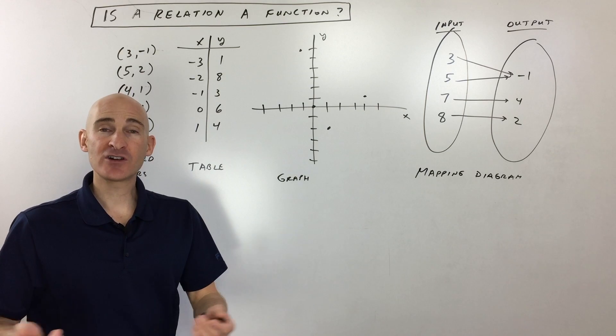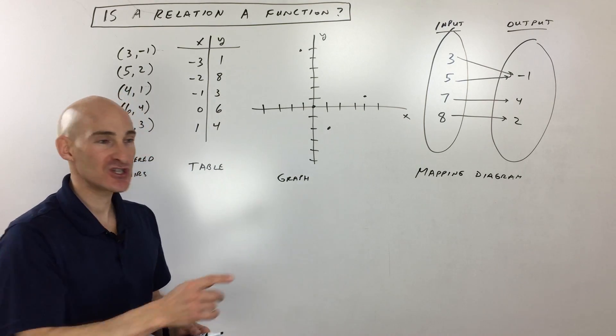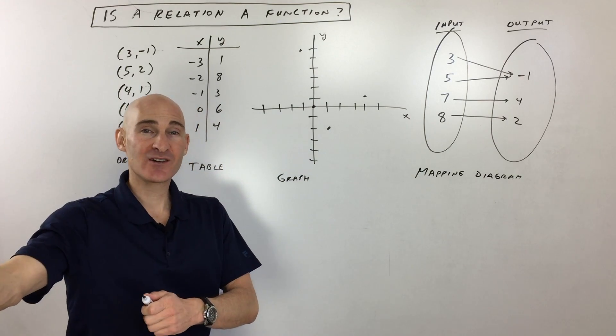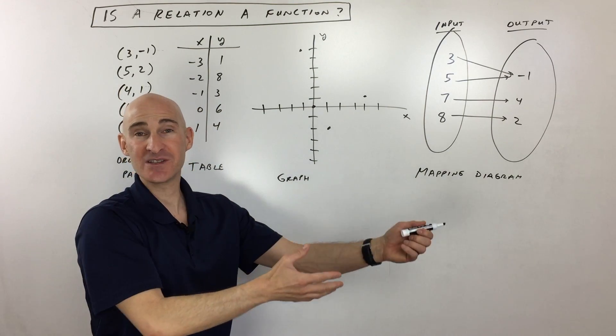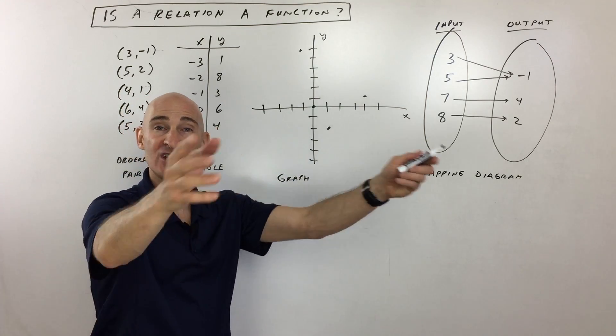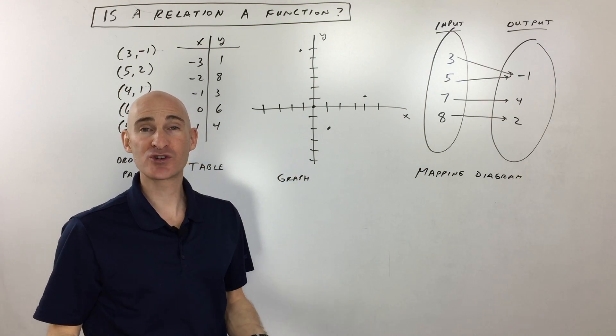A function is like a vending machine. If you go to a vending machine and press A1, and one time you get a Coca-Cola and one time you get a Pepsi, that's unpredictable. You have one input but you're getting more than one output. You don't know what you're going to get.